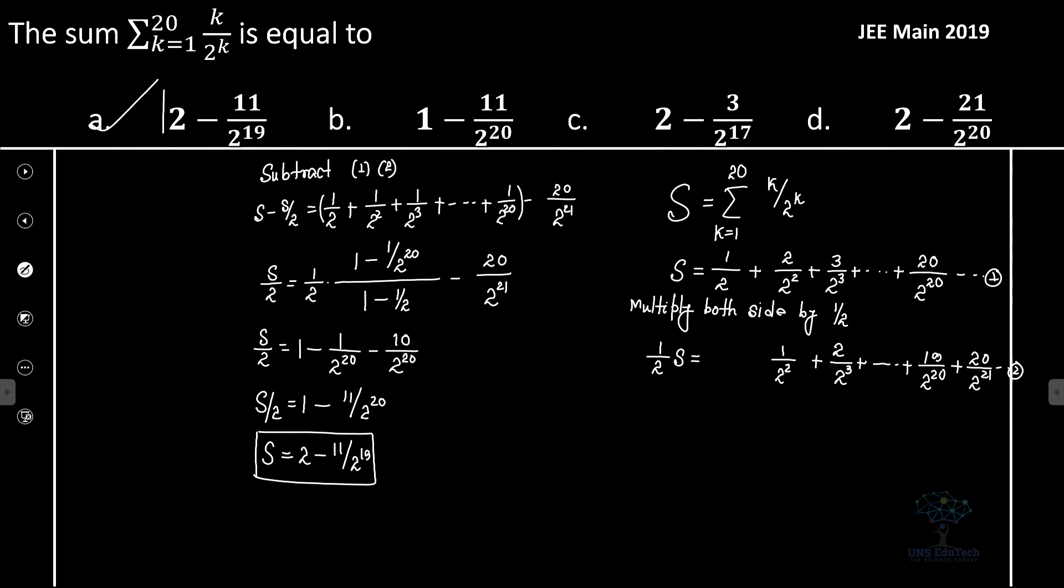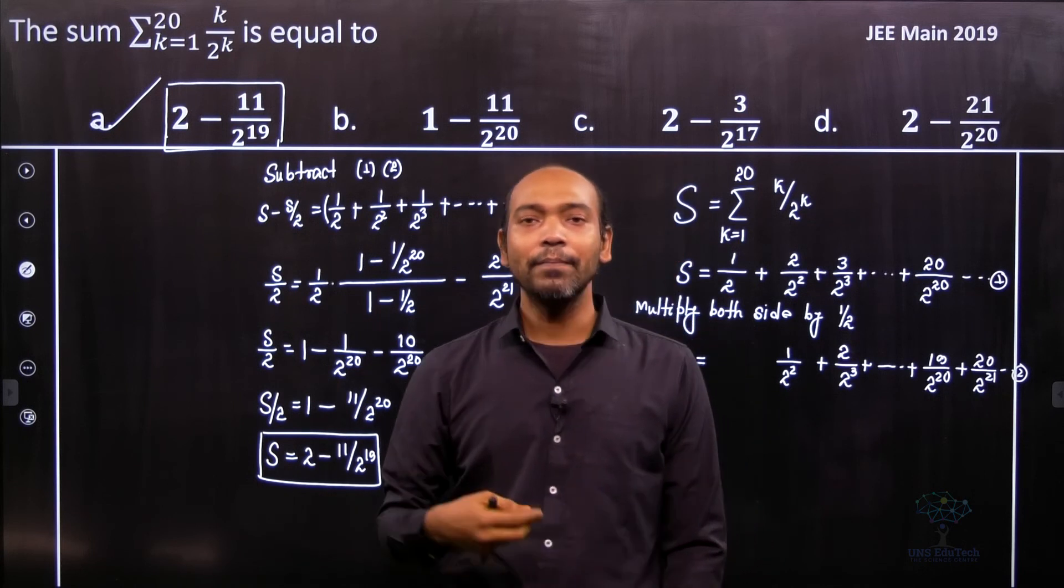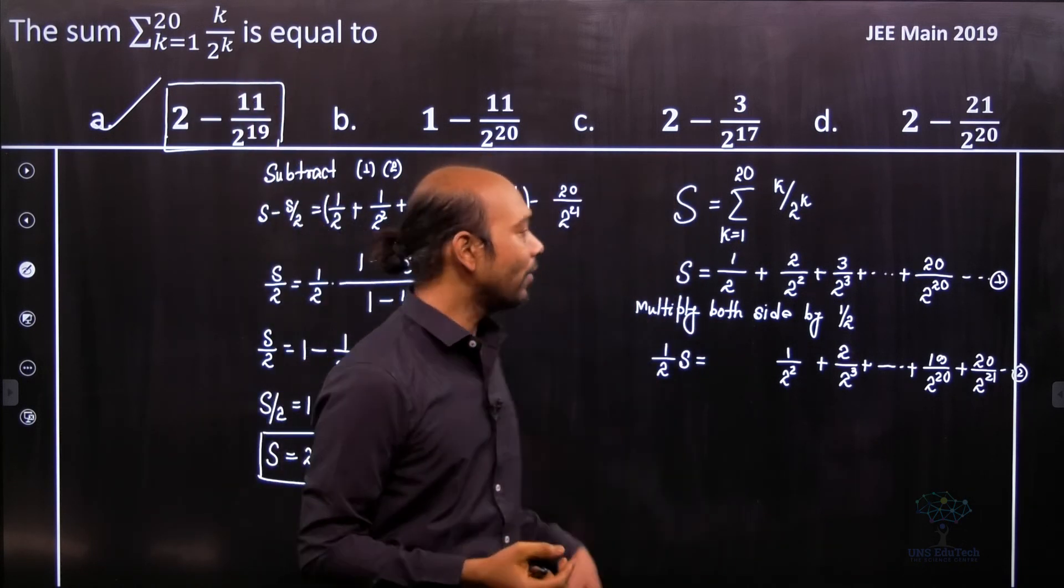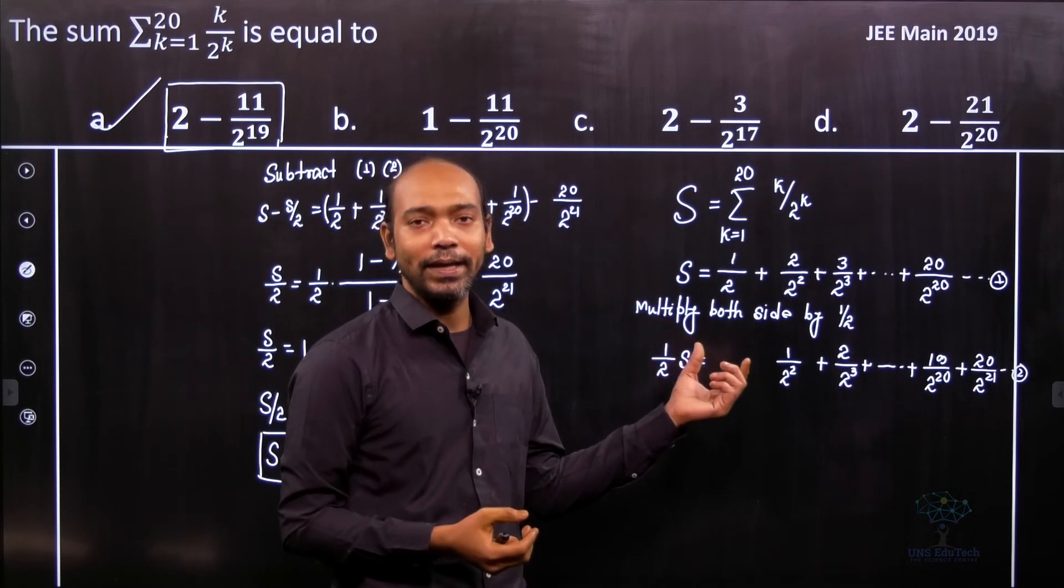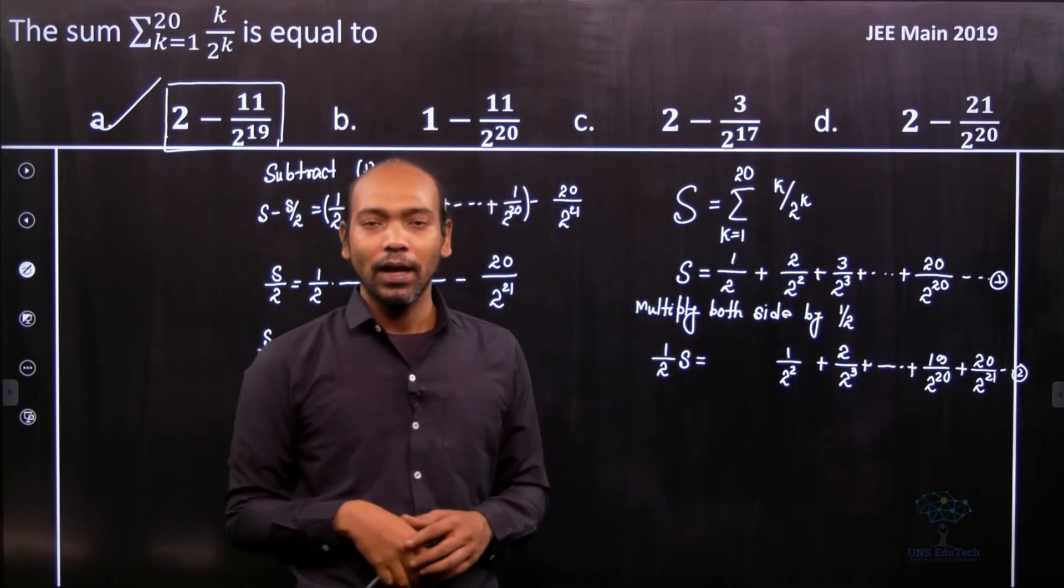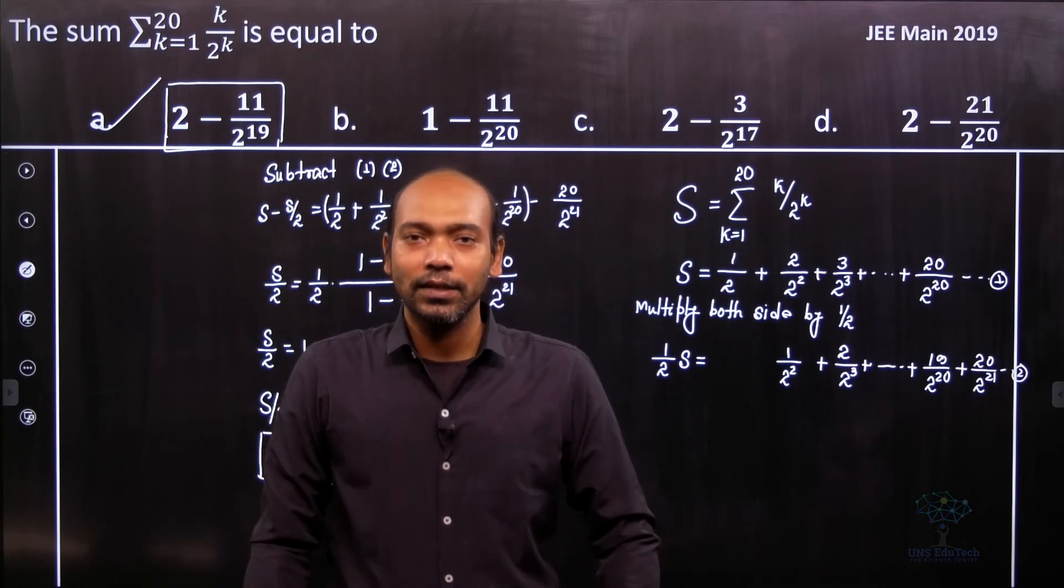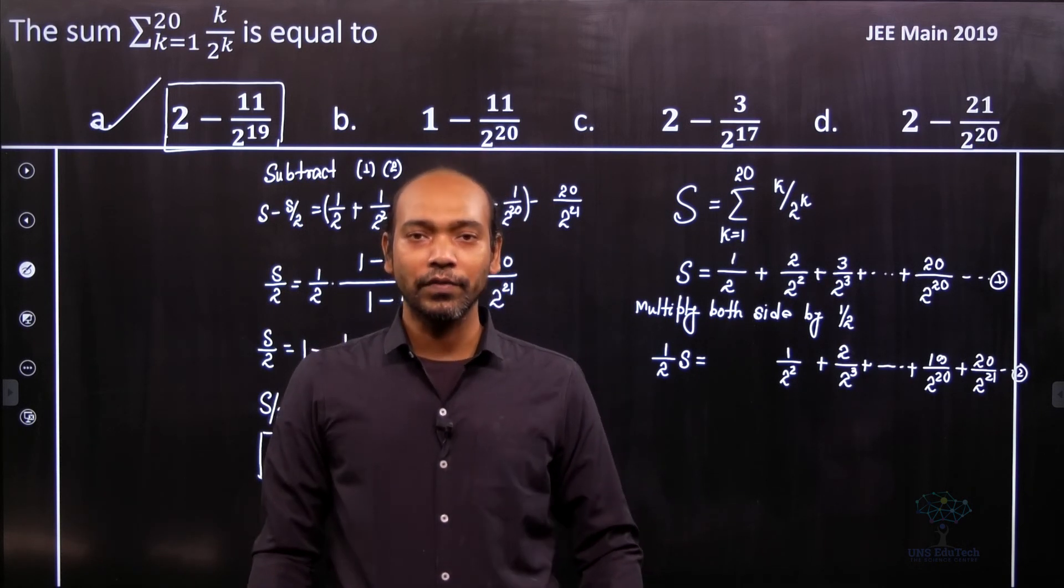So therefore for this problem option a is the correct answer. So it's actually a problem in the GP series and we have to rewrite that in a typical form and we have to use these tricks by multiplying by half. That's it. I think you understood the tricks. Hope you understood it and that's it for this problem. See you in next video. Thank you.